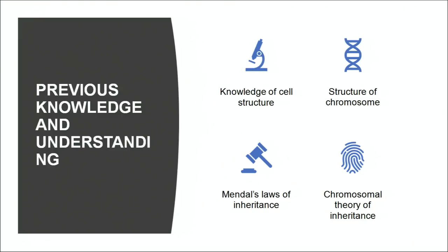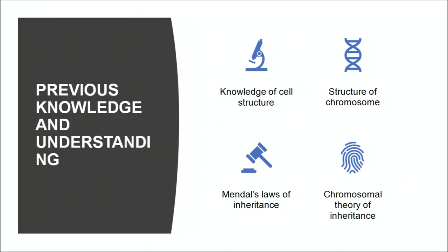Before we take up this topic, we must know about the cell structure. As we know there are prokaryotic and eukaryotic cells. Prokaryotic cells do not contain a proper nucleus or the membranous structures, while the eukaryotic cells contain a proper nucleus which is covered by a nuclear membrane. We should also know about the structure of the chromosome. Chromosome is made up of two chromatids which are joined through a centromere. In the earlier chapters, we have studied about Mendel's laws of inheritance — the law of dominance, law of segregation, and law of independent assortment.